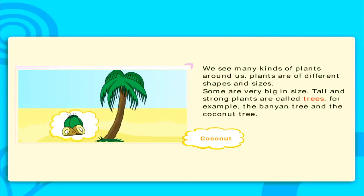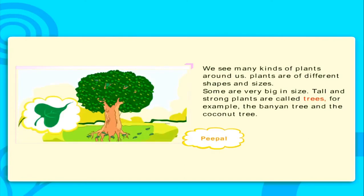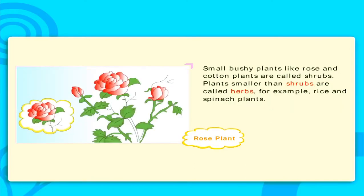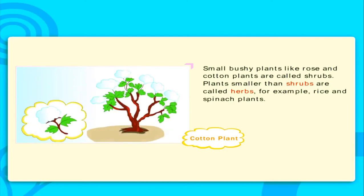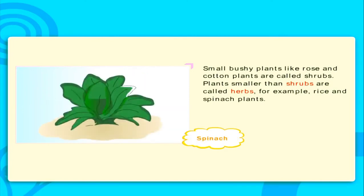Some are very big in size. Tall and strong plants are called trees. For example, banyan, peepal, and coconut tree. Small bushy plants like the rose and cotton plants are called shrubs. Plants smaller than shrubs are called herbs. For example, spinach and rice.